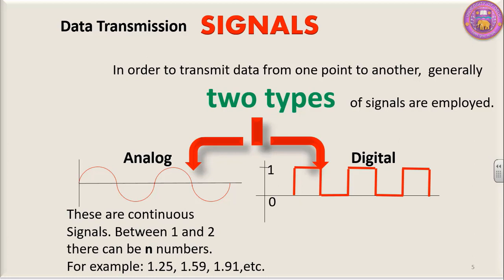In the case of analog signals, these are continuous signals as they are in the form of waves. Between 1 and 2 there can be n numbers — for example 1.25, 1.59, 1.91, etc. Since it is in the form of waves, it is in continuous form.